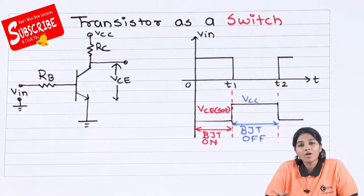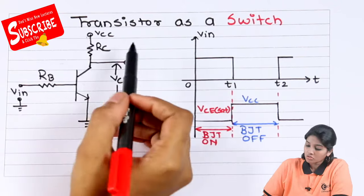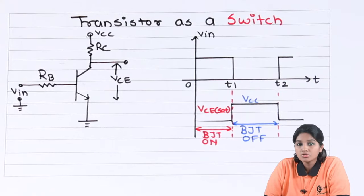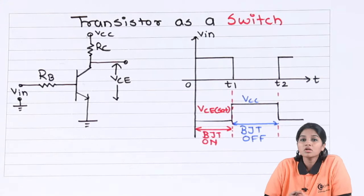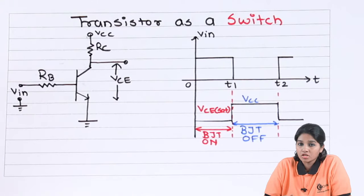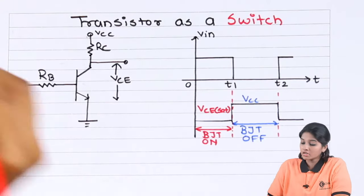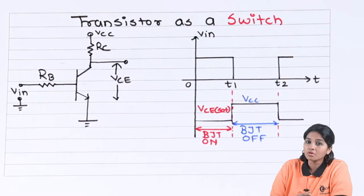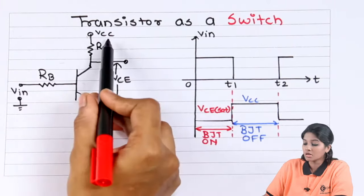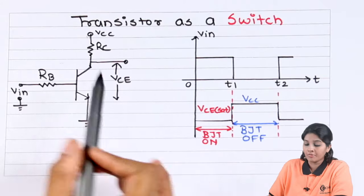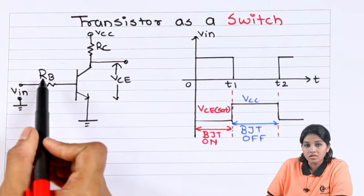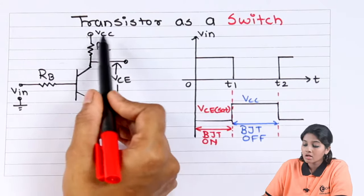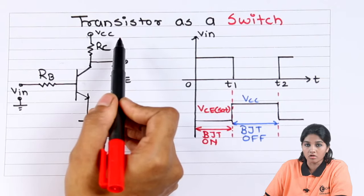Now let's see how transistor as a switch works. This is the circuit we are going to use in the case of transistor as a switch. In this circuit, we are using common emitter configuration, in which the emitter terminal is considered as the common terminal. The input is applied between base and emitter, and output is taken across collector and emitter. So base current acts as input current and collector current acts as output current.